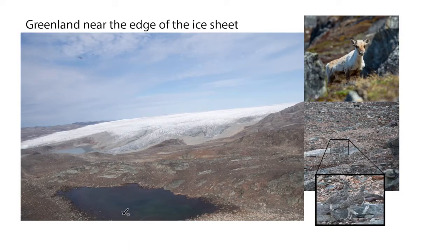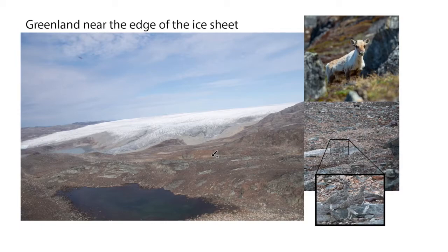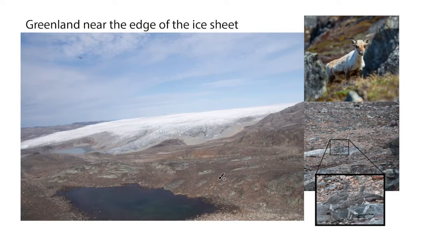I'd like to use Greenland as an example of an ecosystem with low primary productivity. This is an image of the edge of the Greenland ice sheet towards the southwest part of Greenland. This area is dark for a large part of the winter because it's a very high latitude, and the area is also very cold because it doesn't get sunlight in the winter and because of the cooling effect of the large ice sheet. So in this area there is very little vegetation.